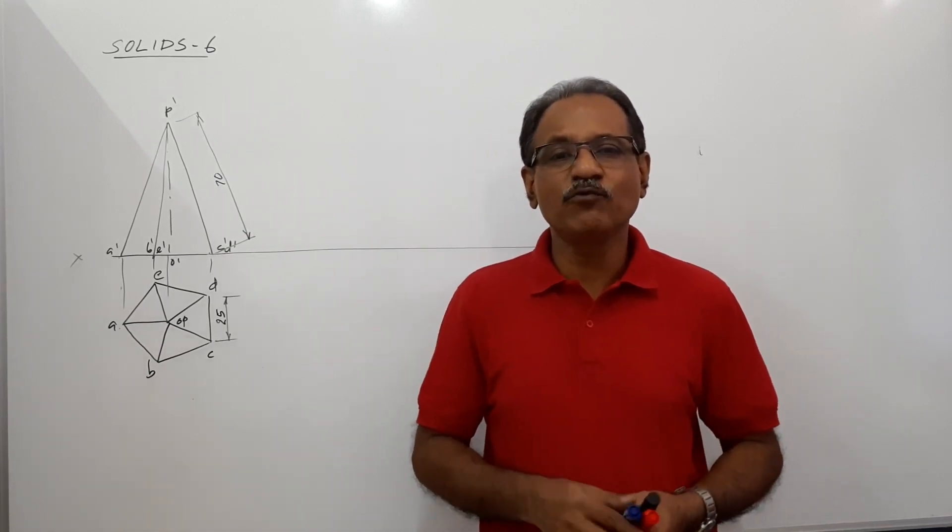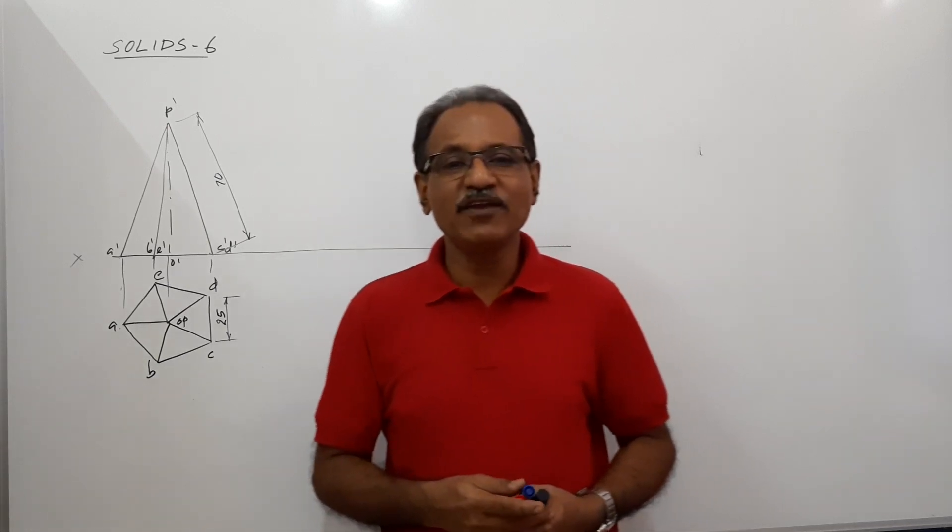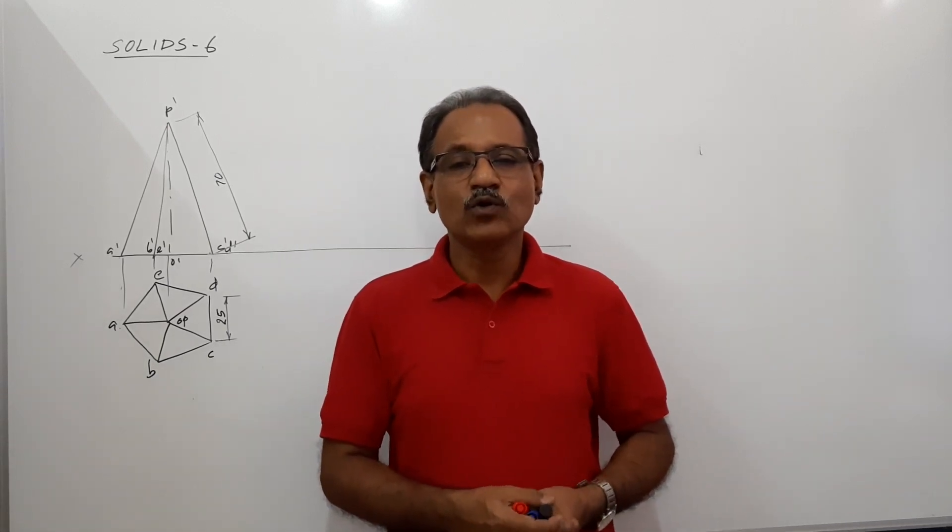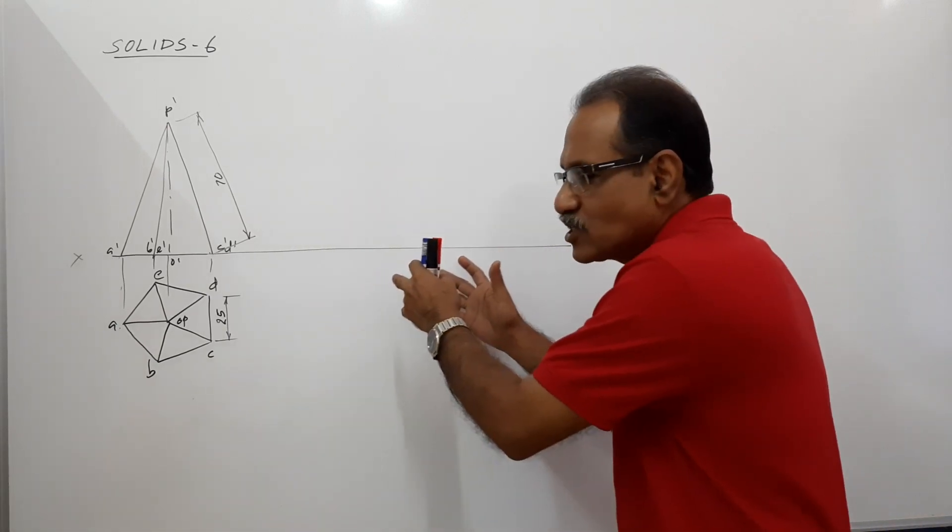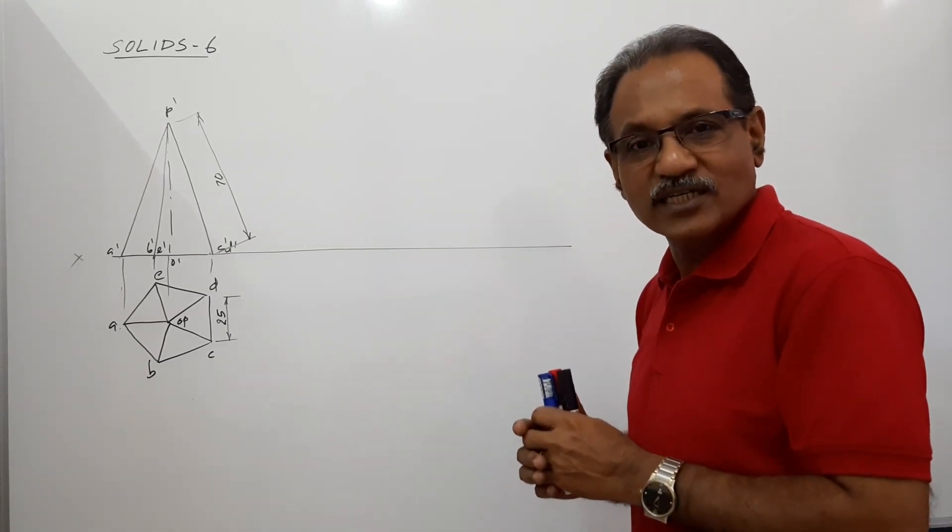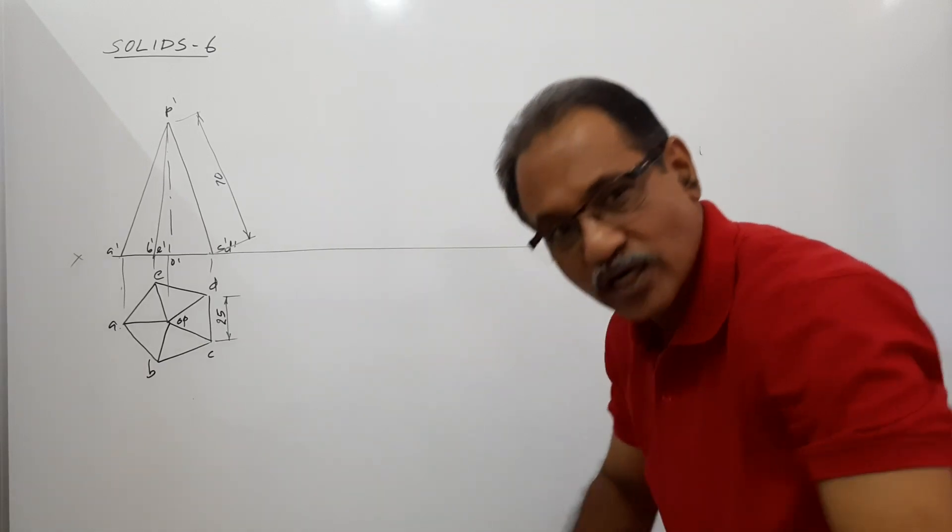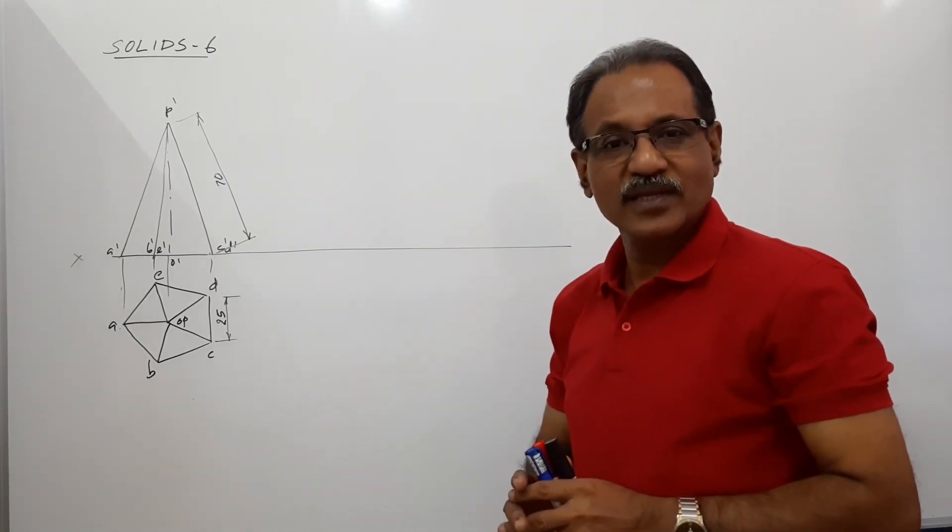Let me explain what is side view. We have not drawn side view. Now, if an object is standing here, the projection onto VP is called front view or elevation. The projection onto HP is called top view or plan.